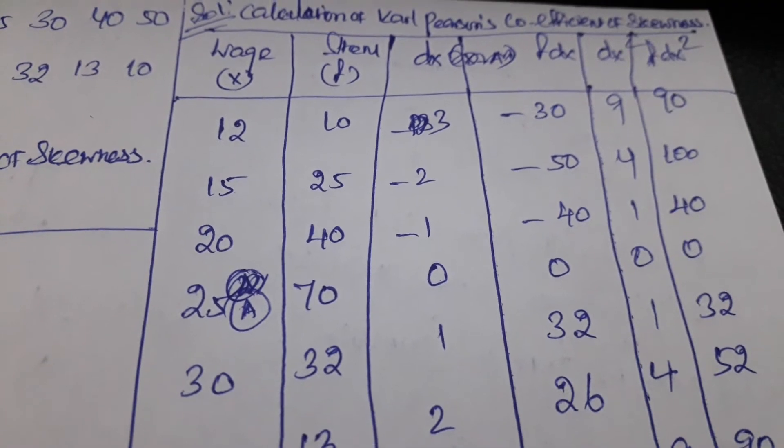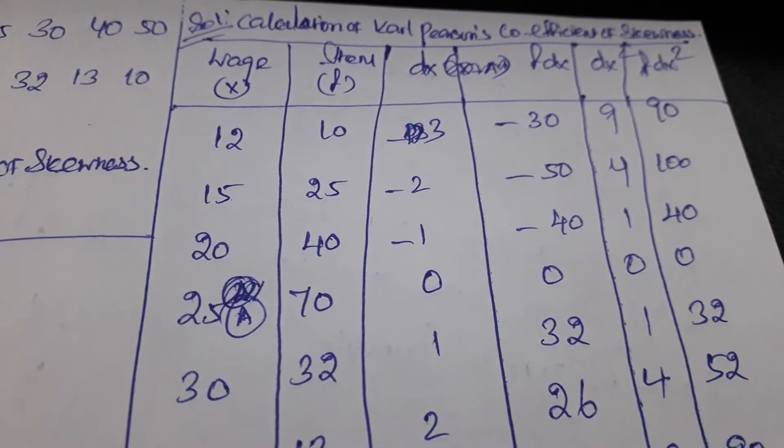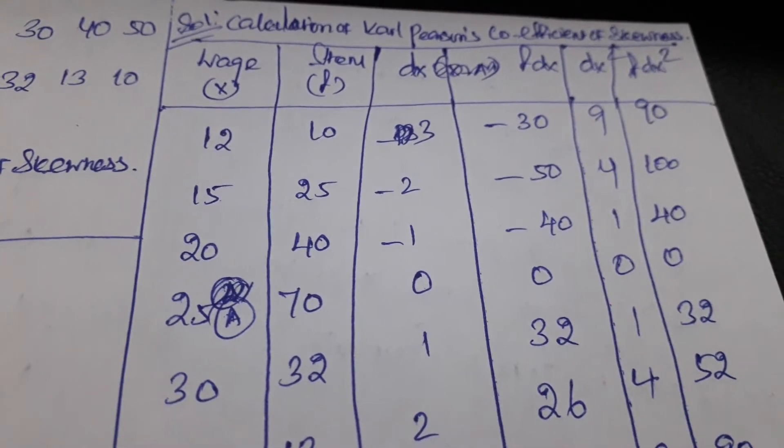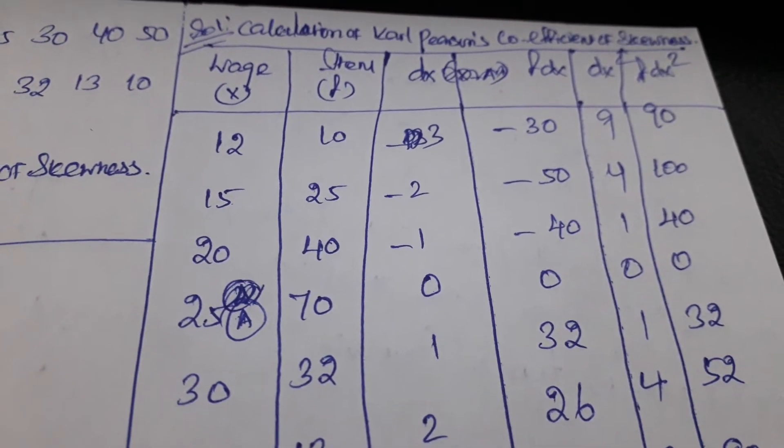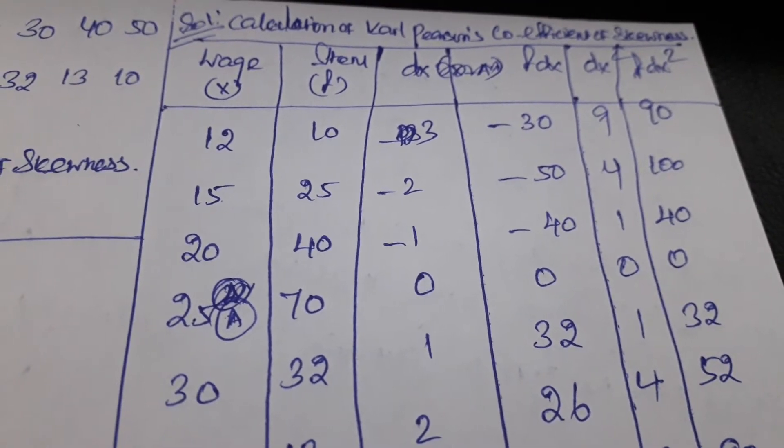So the first column is the wage, we can call it as the x column, then item column. We can name it as frequency.